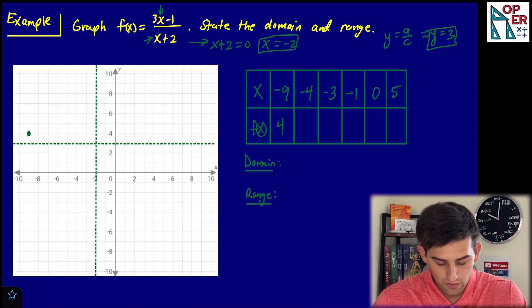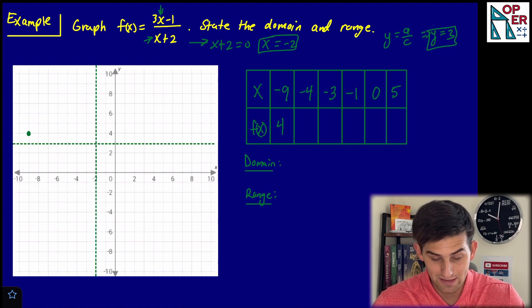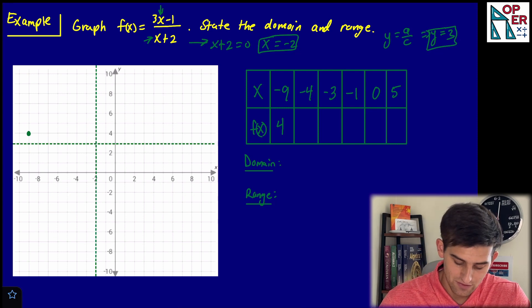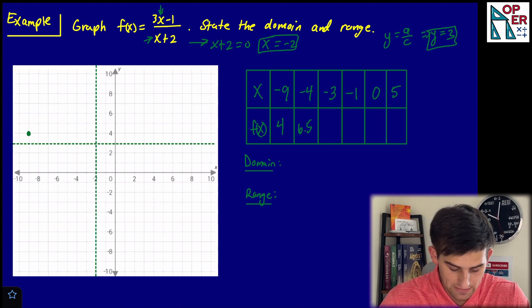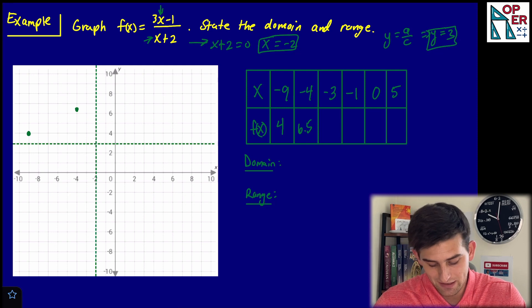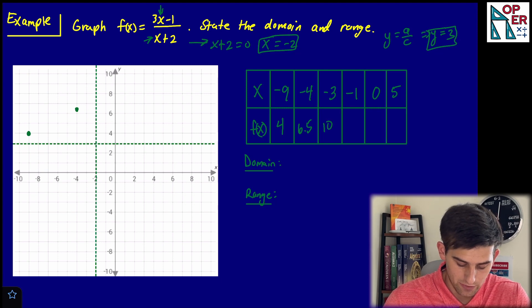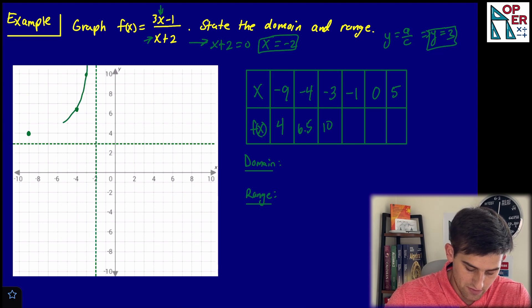For x equals negative four: three times negative four is negative 12, minus one is negative 13; negative four plus two is negative two; negative 13 over negative two is six and a half. So the point negative four, six and a half goes right there. For x equals negative three: three times negative three is negative nine, minus one is negative 10; negative three plus two is negative one; negative 10 over negative one is 10. So the point is negative three, ten. That gives us the left branch.